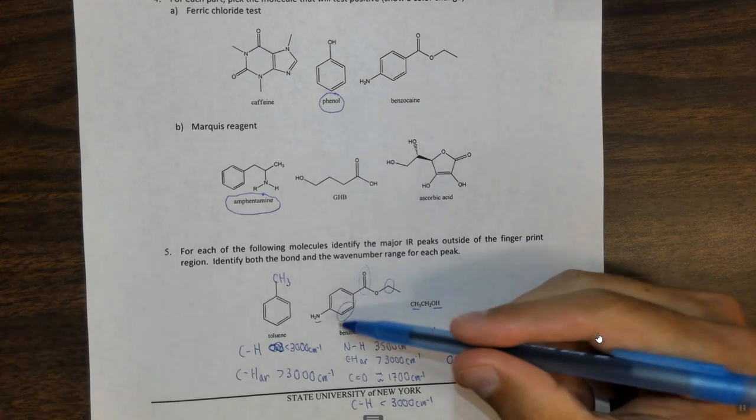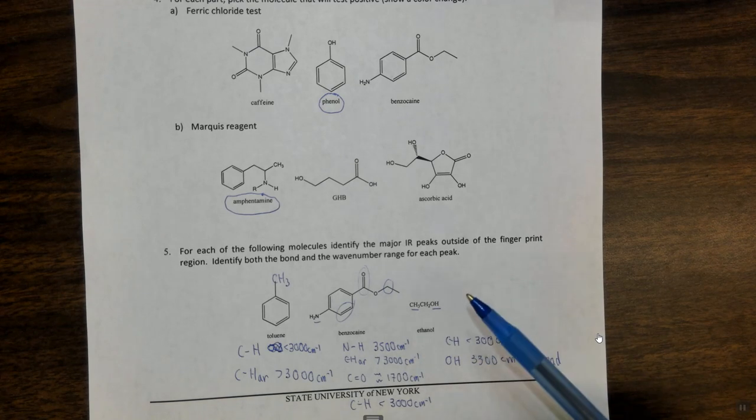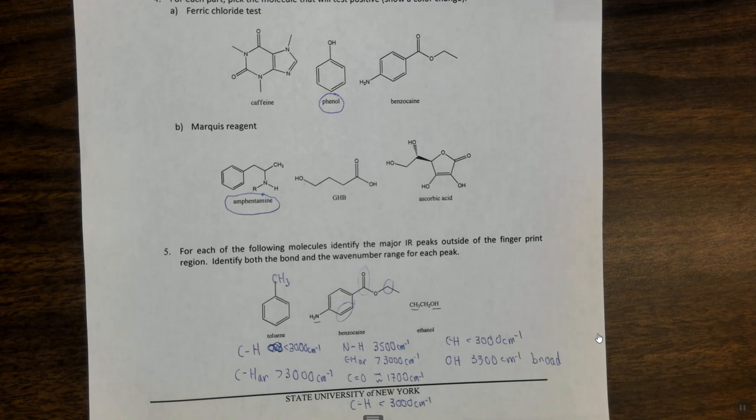So this gives a little bit of an idea of some of the peaks we could identify outside of the fingerprint region above about 1,500 centimeters to the minus one using IR. I will also mention that C double bond C is sometimes seen outside of the fingerprint region, but there's two things going on with that. One, a lot of molecules have C double bond C, especially drugs of abuse, and also it's very close to the fingerprint region. So whether you put that in or don't put that in, I think it's optional. So said another way, if you put it in great, if you don't put it in great. Either way is acceptable.